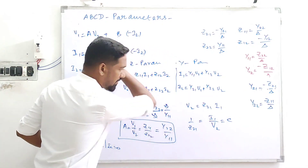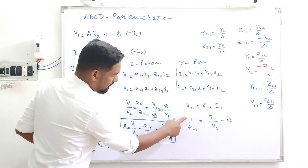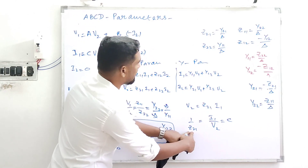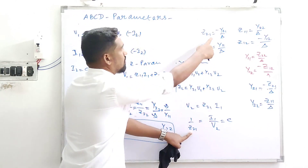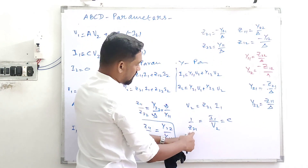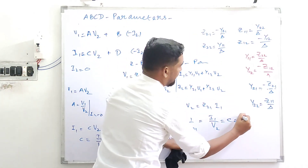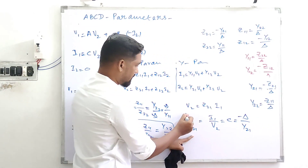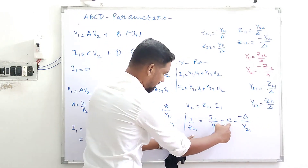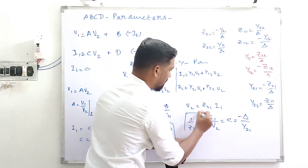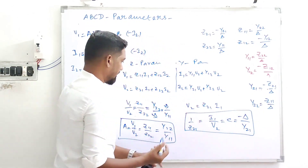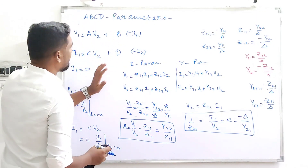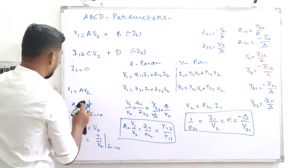For C in terms of Y parameters: since Z21 = -Δz/Y21 (from the Z-to-Y conversion), we have 1/Z21 = -Y21/Δz... more precisely, C = 1/Z21 which equals -Δy/Y21 in terms of Y parameters. These are the expressions derived from the open-circuit (I2 = 0) condition: A and C.